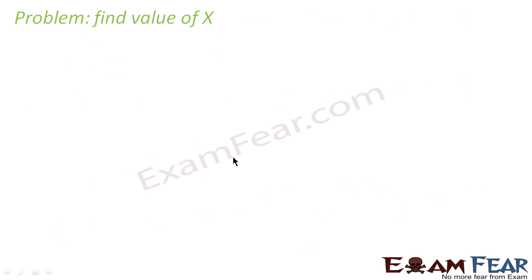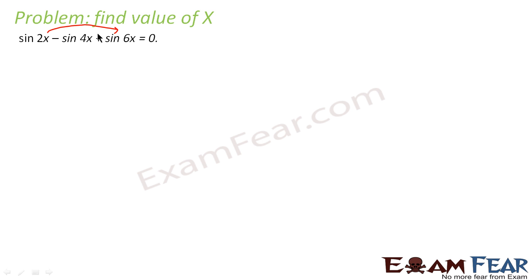One more problem — here also we have to find the value of x. We are told that sin 2x − sin 4x + sin 6x = 0. We observe that (2 + 6)/2 = 4, and we have sin 4x in the middle, so we can club sin 2x and sin 6x together using the formula: sin A + sin B = 2 sin((A+B)/2) cos((A−B)/2).